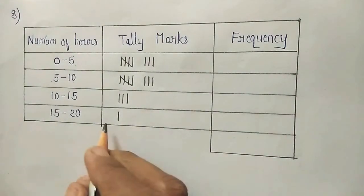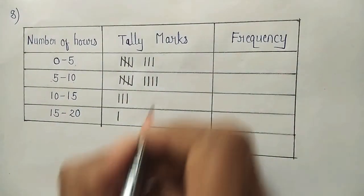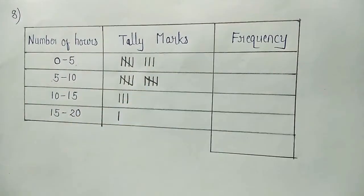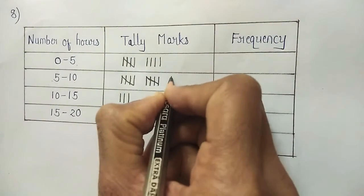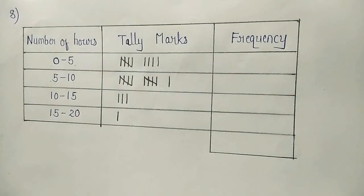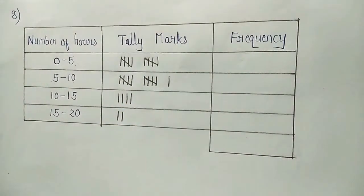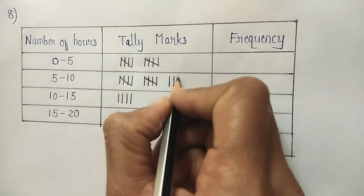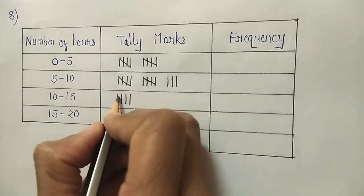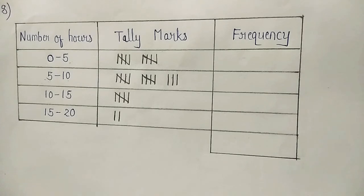We put the telemark for 15 in class 15 to 20. Then we continue with the remaining values: 8, 8, 8, 1, 7, 4, 7, 4, 17, 14, 8, 6, and 12. Let us now count the telemarks and put the frequency numbers.